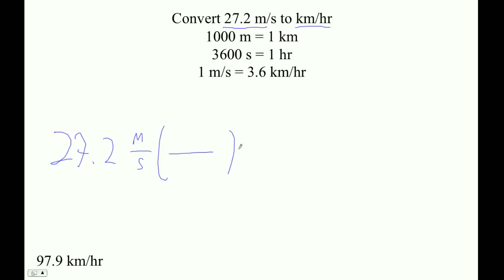We'll do it this way first. Let's see, meters. I want to cancel meters, so I put it down there. I want to cancel seconds, so I put it there. I think I want hours, and I want kilometers. So one kilometer is a thousand meters. 3,600 seconds is one hour.